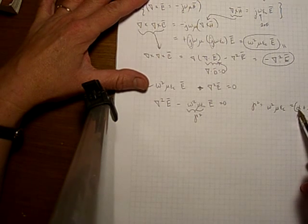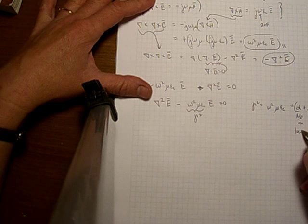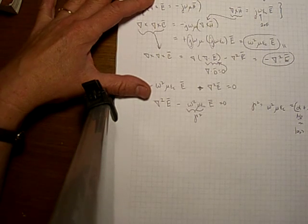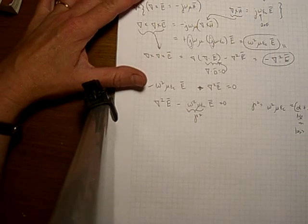So alpha represents the loss. Beta represents the phase change. And that's the same that we've seen in all of our other wave equations.